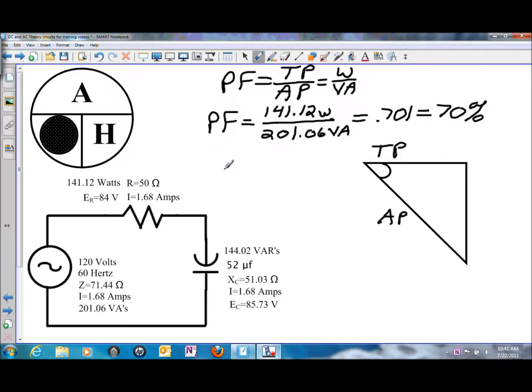But without taking that .701, the easiest way to calculate this for angle theta, it's the inverse of cosine times that value. So what you can do is that after you divide the 141.12 divided by 201.06, simply hit the equals button. It will put .701 on the screen.